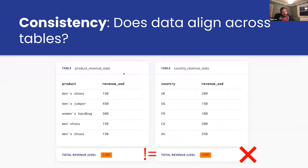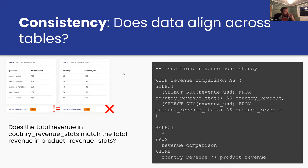The fifth and final dimension is consistency — do all the datasets you create and share with the business align with each other? One report says one thing, another says something different — that erodes trust. You want to write tests so that if this happens, you get alerted before releasing changes. For example, does the total revenue in one table always match the total revenue in another? Again, a SQL query — if it returns results, it's a failure.